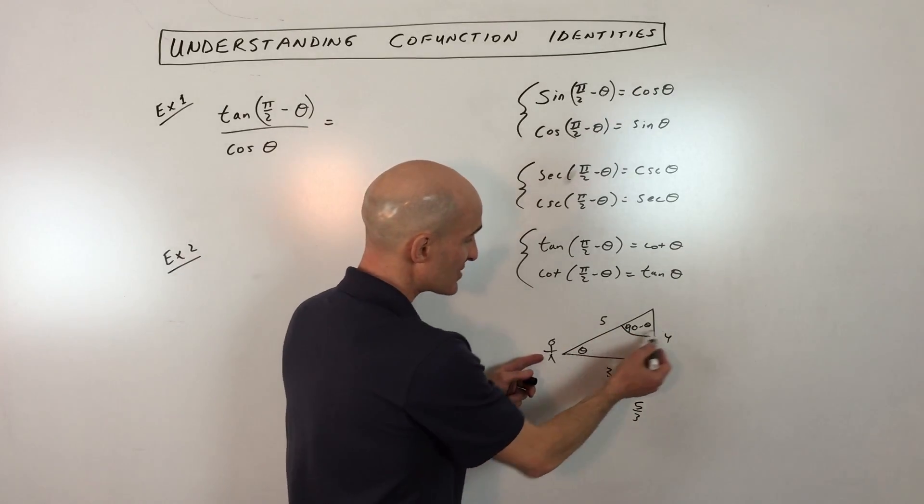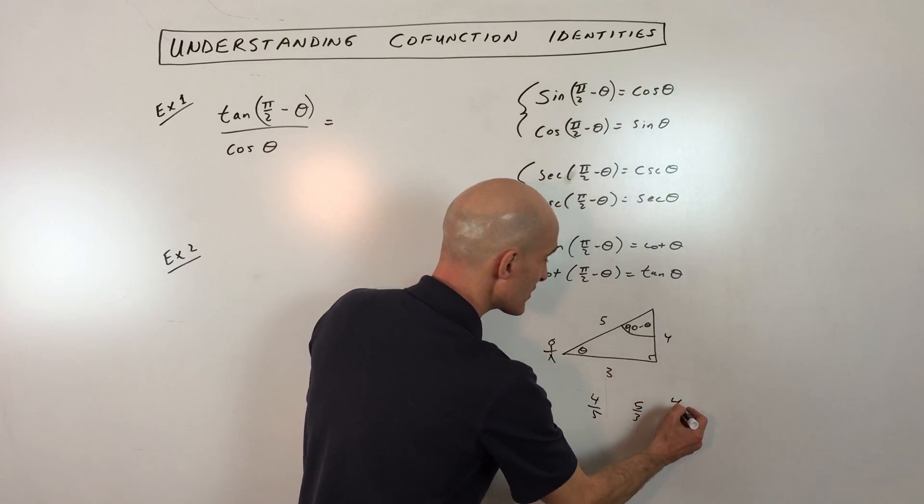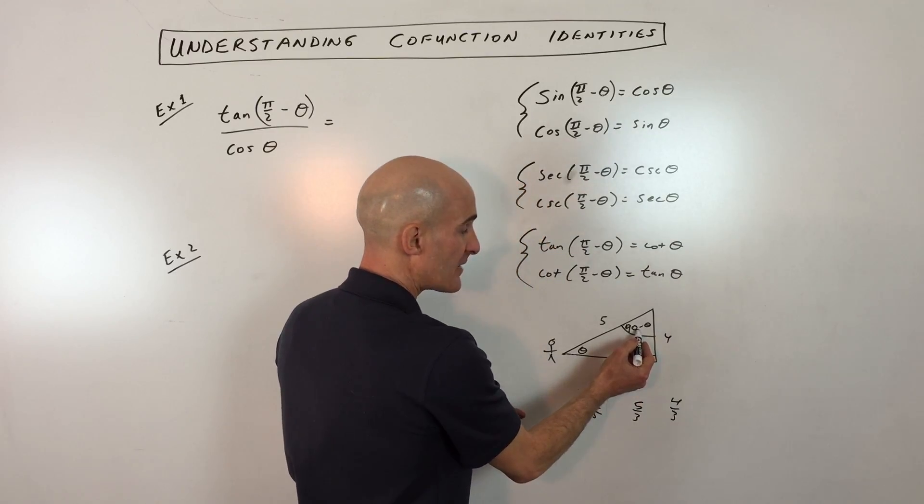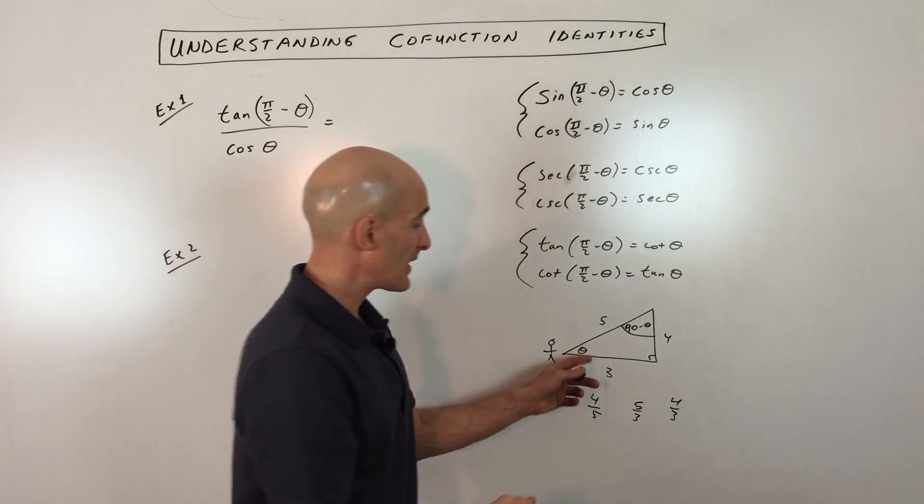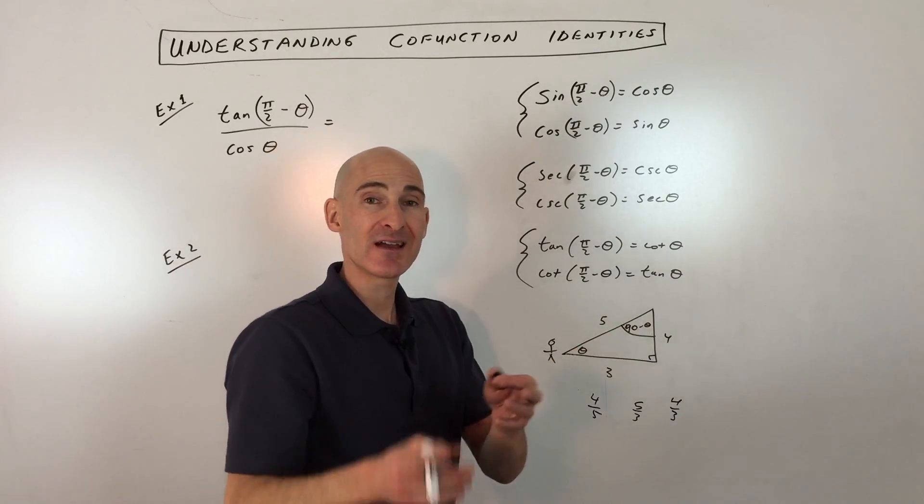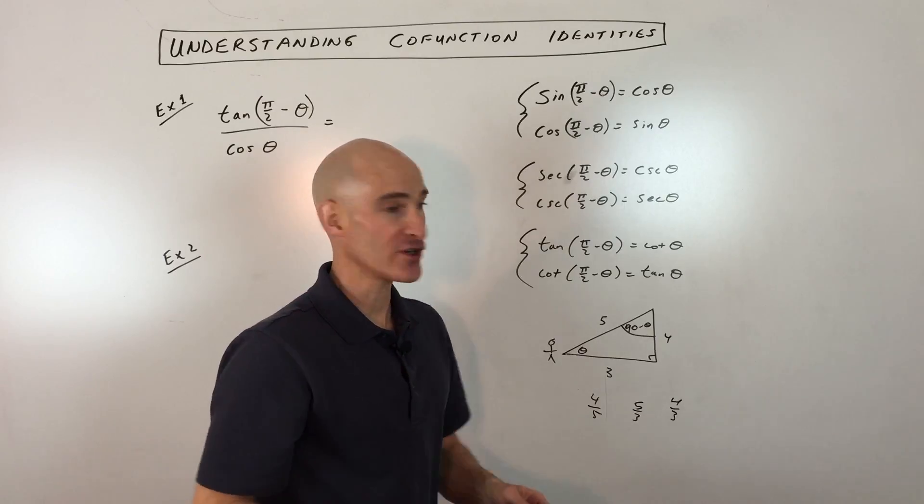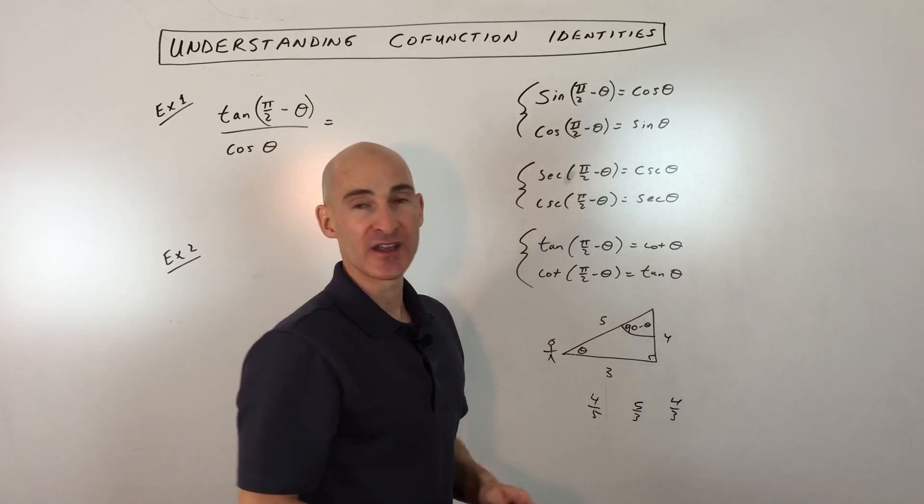And same thing for tangent, like tangent is opposite over adjacent, that's four thirds. But if we do the cotangent of 90 minus theta, that's adjacent over opposite, that's also four thirds. So depending on what angle you're using, if you use the complementary angle or the cofunction, you're going to get an equivalent value.